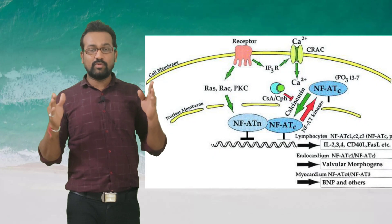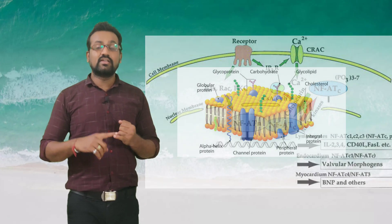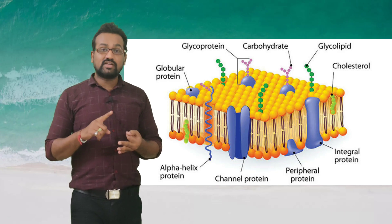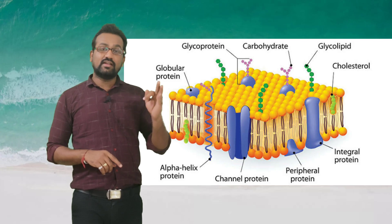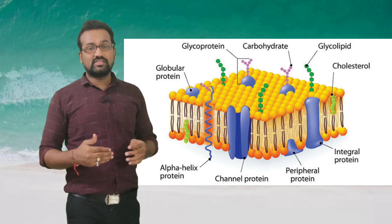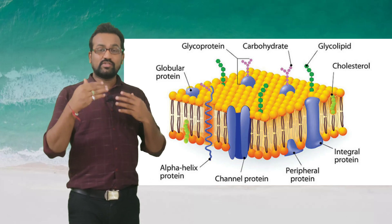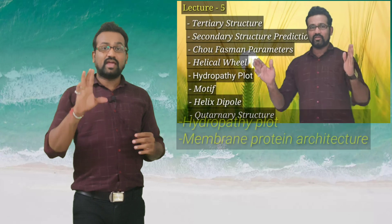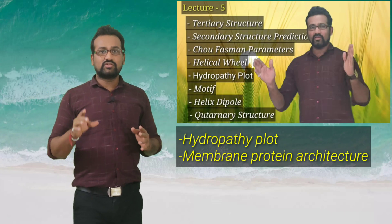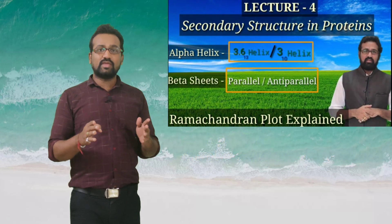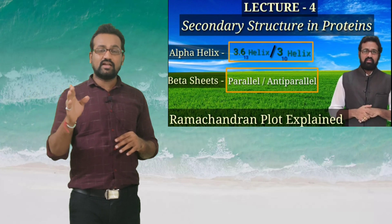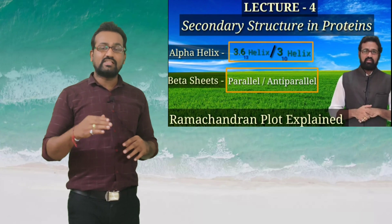Up until now we have seen the different types of lipids present in the membrane — glycoproteins, sphingolipids — and studied different sterols: fungi contain different types of sterol, plants contain different types, and animals contain different types. Today we have seen the membrane proteins present in the membrane. I would also request you to check out the lecture on the hydropathy plot to determine the amino acid status of membrane proteins, as well as the Ramachandran plot lecture on alpha helix and beta sheet structure.